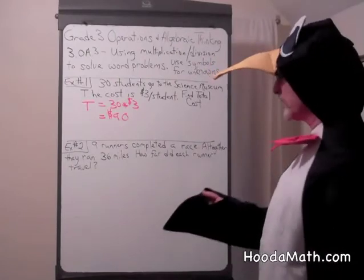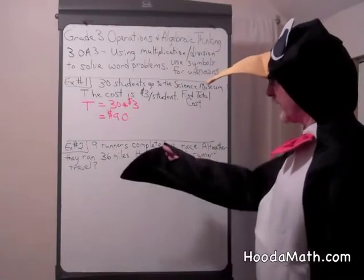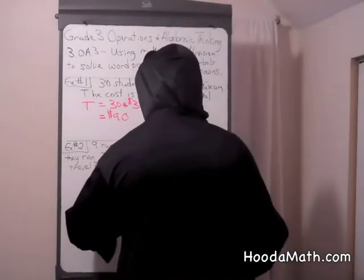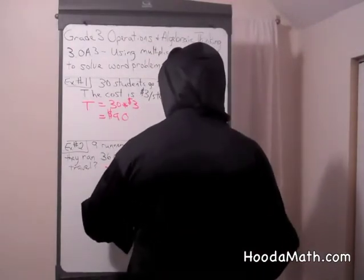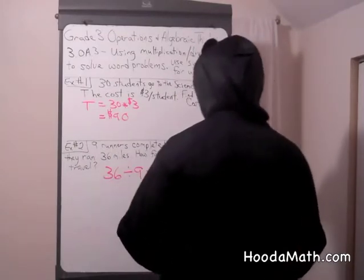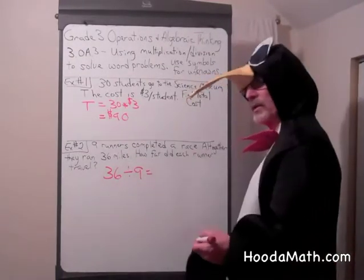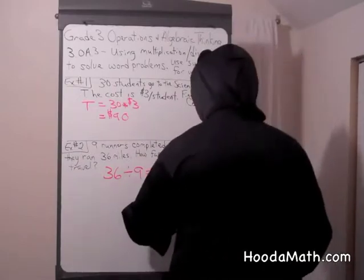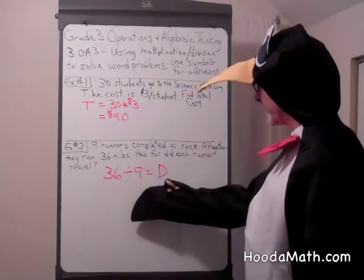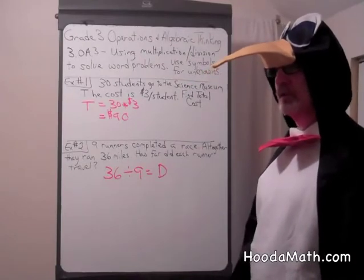Well, each runner traveled a part of the 36 miles, and there are nine runners. So we're going to divide 36 by the nine runners to find out how far each runner traveled. When we say how far something traveled, we could call that D, or the distance. So 36 miles divided by nine runners gives you how far each runner traveled.